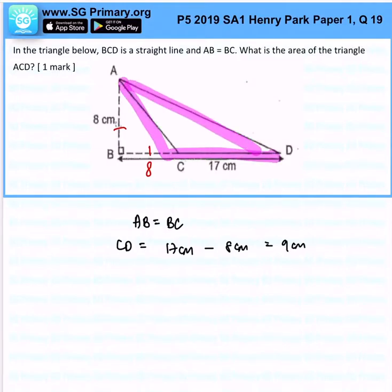This question, we are interested to get the area of the triangle ACD. So the area of ACD will be half times base times height. Base is 9cm, the height is the perpendicular height.